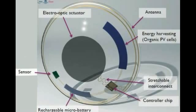In the center you have the electro-optic actuator, which is the display. Off to the right you have an energy harvesting PV cell to harvest light and charge the lens. Down in the lower right hand corner is the electronics and controller chip, and to the left is the rechargeable micro battery.